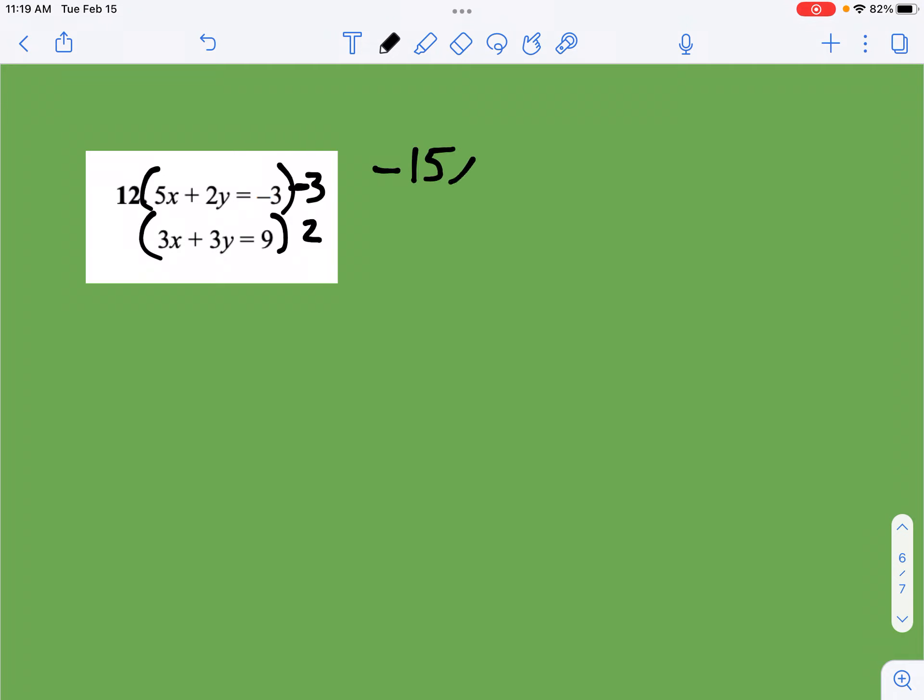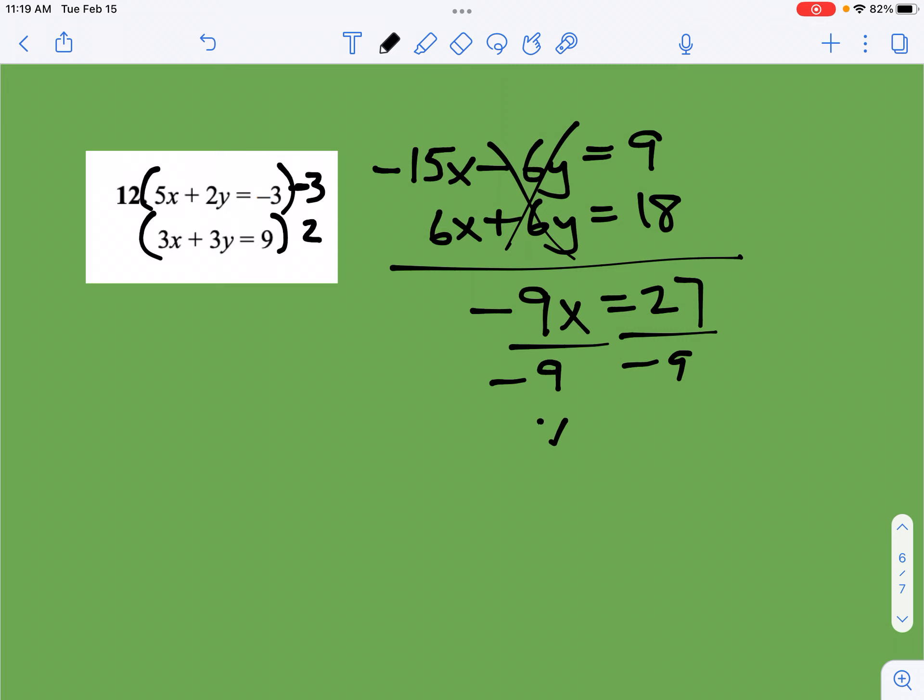So we get negative 15x minus 6y equals positive 9 because negative times negative. And then on the bottom, we get 6x plus 6y equals 18. And so we're going to add numbers now. These go away. 9 and 18 give me 27. And then negative 15x and positive 6x give me negative 9x. So let's divide them both by negative 9, and I get x is equal to negative 3.